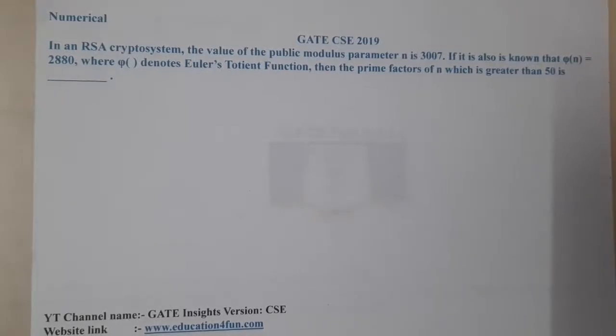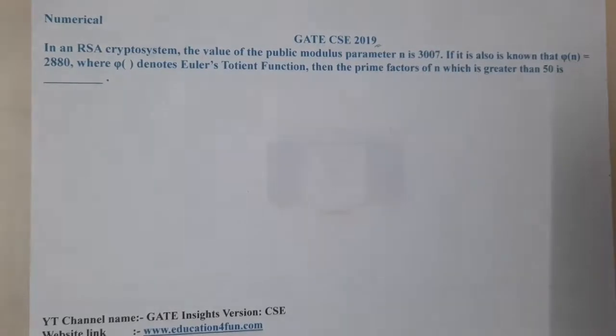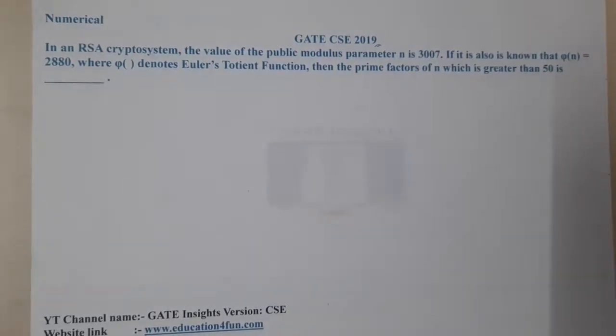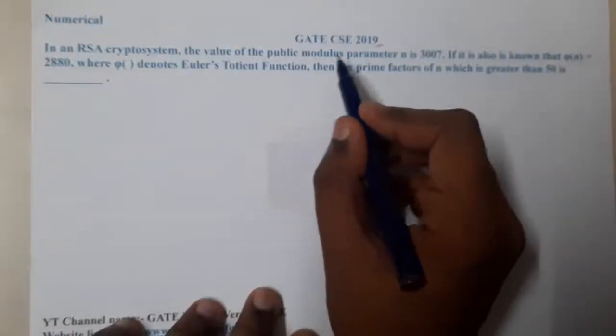Hello guys, we are back with our next lecture. In this lecture, let us go through the next question. This question belongs to GATE CSE 2019. The question is: In an RSA cryptography system, the value of the public modulo parameter n equals 3007.